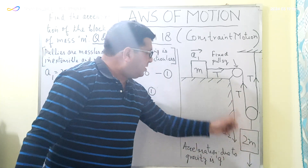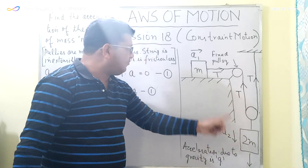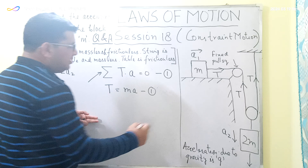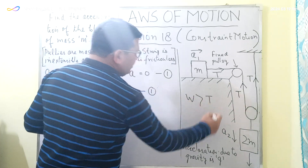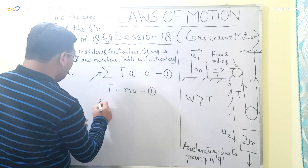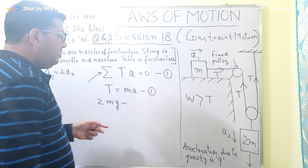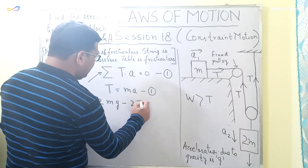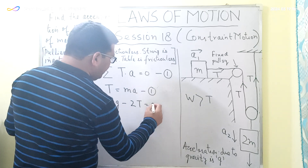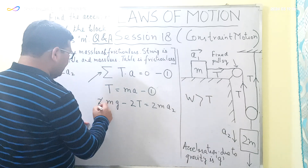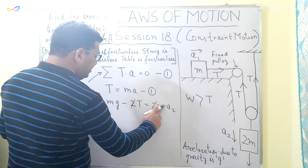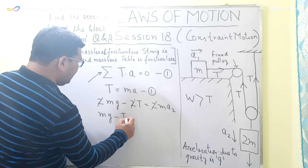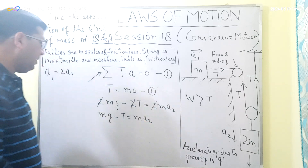For block 2M moving downward, this happens only when the weight of the block exceeds the tension in the string. The weight is 2MG. The net force is weight minus tension: 2MG − 2T = 2M × A2. Dividing through by 2, we get MG − T = M × A2.